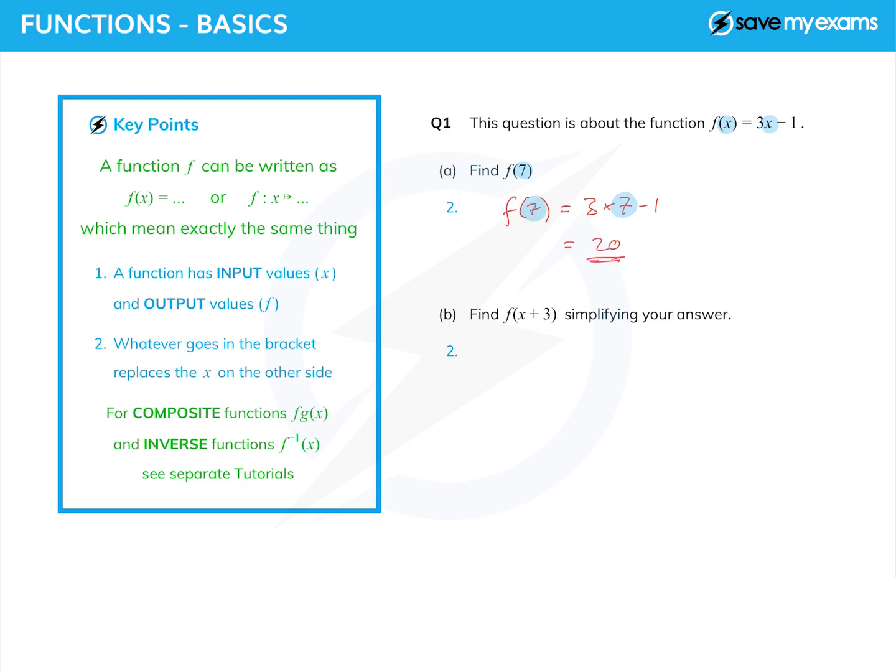So far so good. Now what about part b? Well this time we're asked to find f(x + 3). Now it's the x plus 3 that is replacing the x this time. So where we had 3x minus 1, we now have 3(x + 3) minus 1.